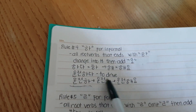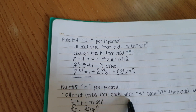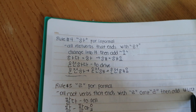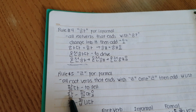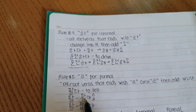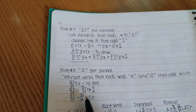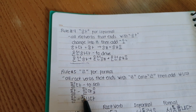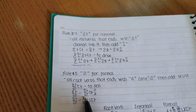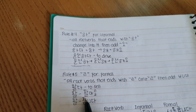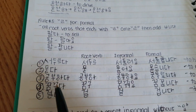So this is rule number four. Then rule number five: 'real' for formal. All root verbs that end with 'real' — omit 'real', then add 'psimnida'. For example, 'palda', meaning 'to sell'. The root verb is 'pal', the present informal form would be 'parayo', and the present formal form would be 'pamnida', since it ends with 'real' — you remove 'real' and since it has a vowel, you add 'psimnida'.